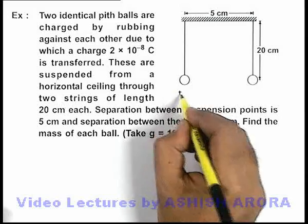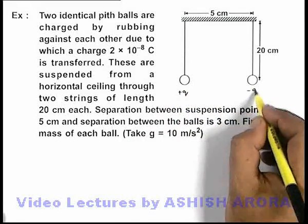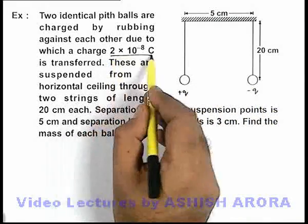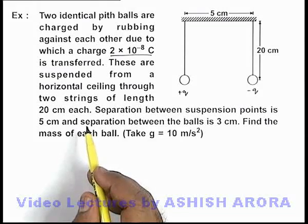One ball will be positively charged and the other will be negatively charged, and the charge is given as 2×10⁻⁸ coulomb.